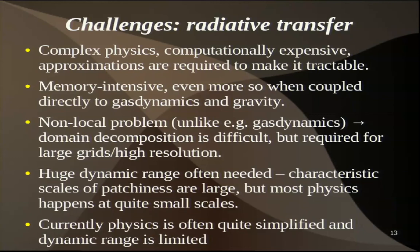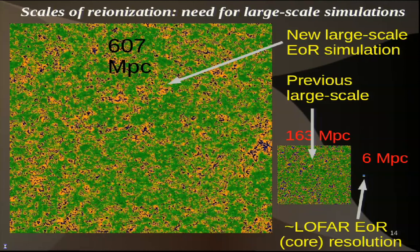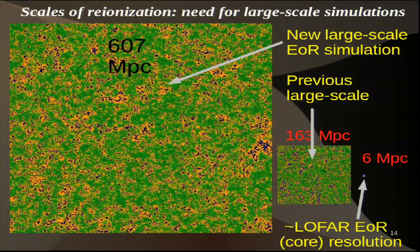The physics is very often quite simplified currently and dynamic range is limited, so larger simulations and larger machines will help if we can use them well. Why do we need large scales? This is one of our current large simulations — previous simulations were 163 megaparsecs, 600 megaparsecs — and this is roughly the LOFAR beam. You can see that the HII regions and neutral regions are basically the same size as the simulation volume, so you cannot simulate regions that are not typical for the universe.